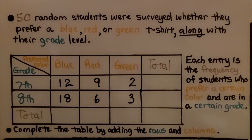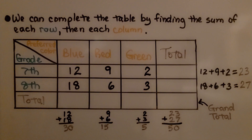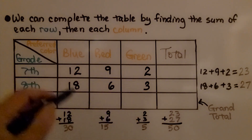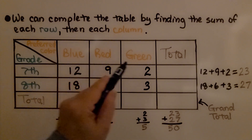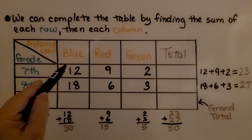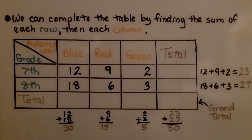Each entry is the frequency of students who prefer a certain color and are in a certain grade. We can complete the table by adding the rows and columns to get the totals. For the row, we have seventh graders who chose blue, red, or green. We add 12 plus 9 plus 2 and we get 23.